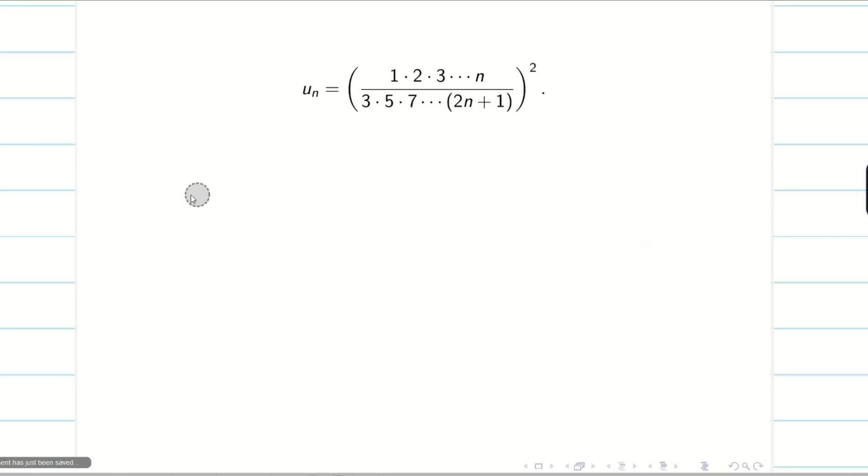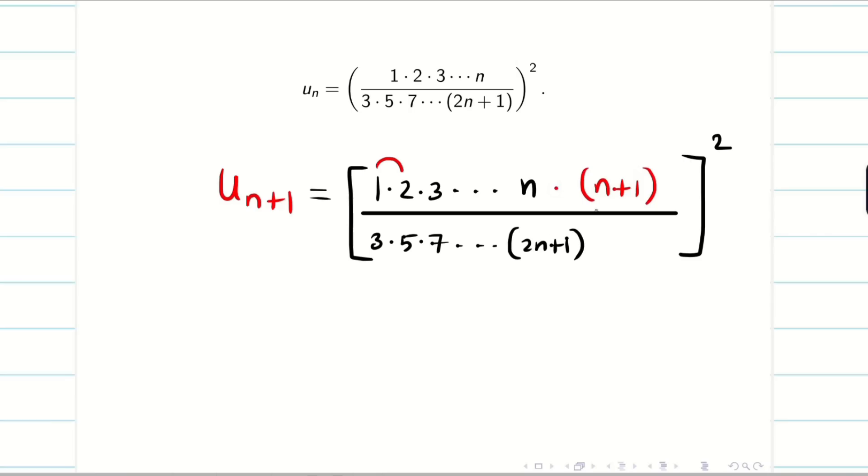Next, we have to go for the n plus 1th term. To write the n plus 1th term, we should be very careful. Whole square will not change. I will write the terms up to n. That is 1, 2, 3, up to n. Similarly, in the denominator, 3, 5, 7, up to 2n plus 1. So the next term means we have to add the difference. So here the difference is 1. The next term is n plus 1. Here the difference is 2. The next term is 2n plus 1 plus 2, that is 2n plus 3. Hope you understand why I am writing in a different color.